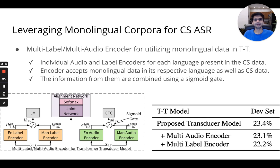We propose a multi-label or multi-audio encoder framework for code-switched speech recognition. In this framework, we maintain individual audio and label encoders for each language present in the code-switched data. Each encoder can accept both the respective monolingual language as well as the code-switched data. The information from the two encoders is combined using a learnable sigmoid gate. Interestingly, the improvements from the multi-label framework are far greater than those from the multi-audio framework, possibly due to the difficulty in learning language boundaries in the acoustic space.